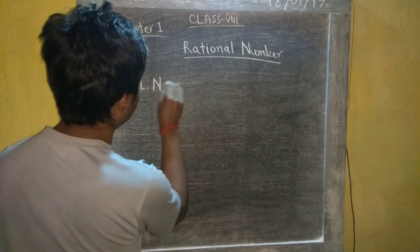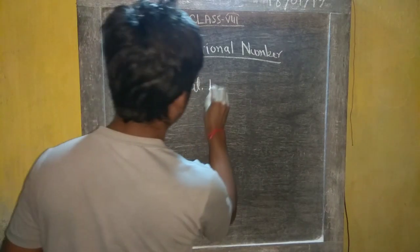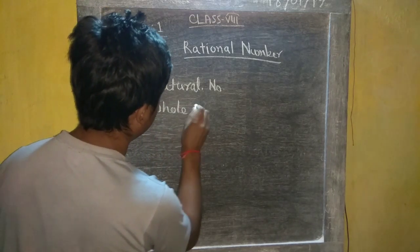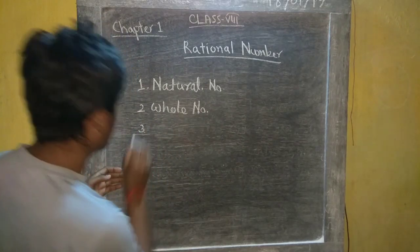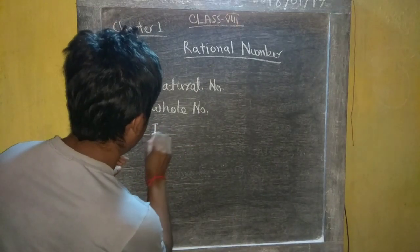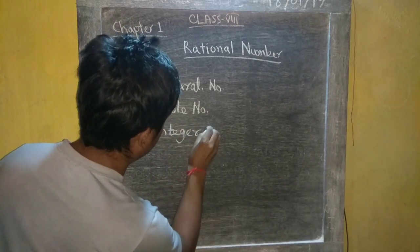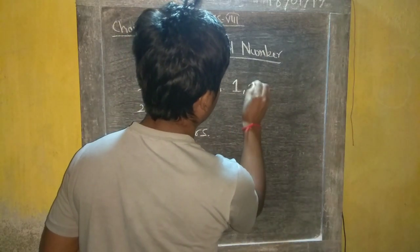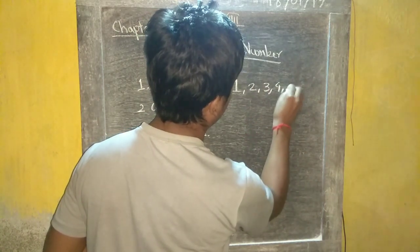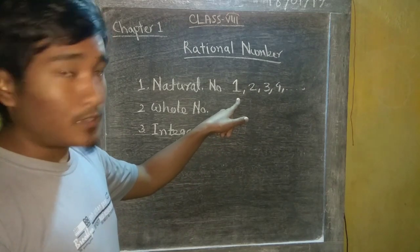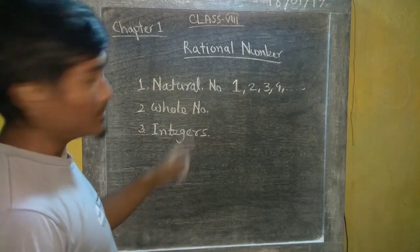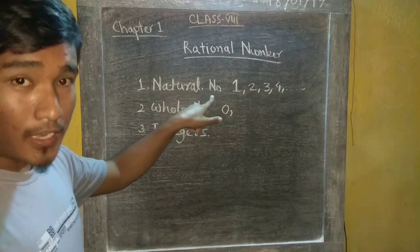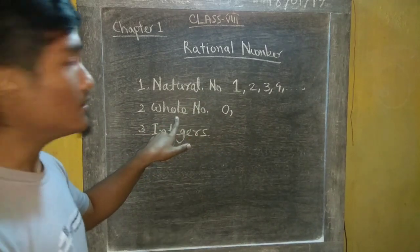Natural Number example: the smallest natural number is 1. Likewise, the smallest whole number is 0, including all natural numbers and 0. All are whole numbers.